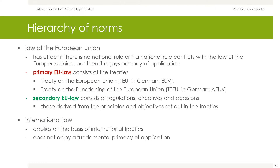The law of the European Union has effect if there is no national rule or if a national rule conflicts with EU law. Therefore, the law of the European Union enjoys the primacy of application. The law of the European Union is divided into primary and secondary law. The primary law consists of the treaties: the Treaty on the European Union, TEU or in German EUV, and the Treaty on the Functioning of the European Union, TFEU or in German AEUV. The secondary law consists of numerous regulations, directives, and decisions derived from the principles and objectives set out in the treaties.